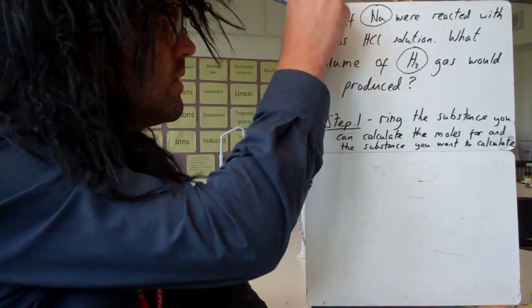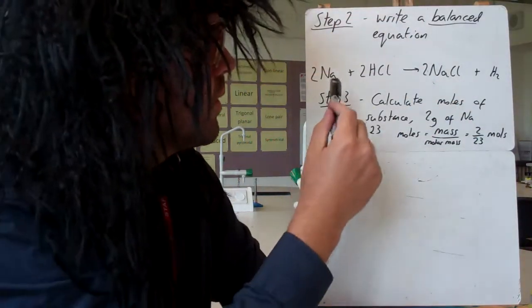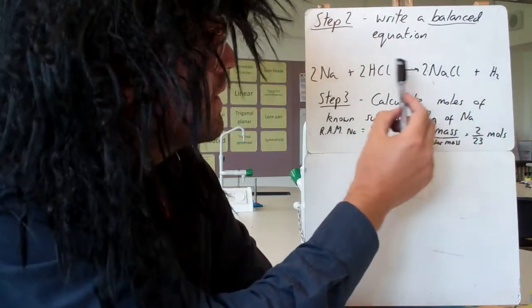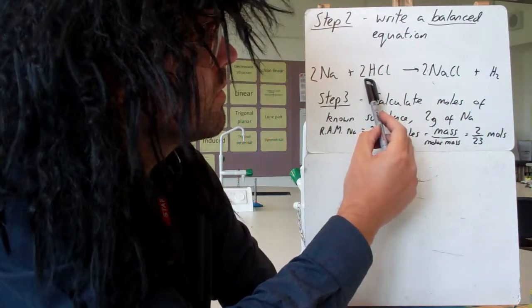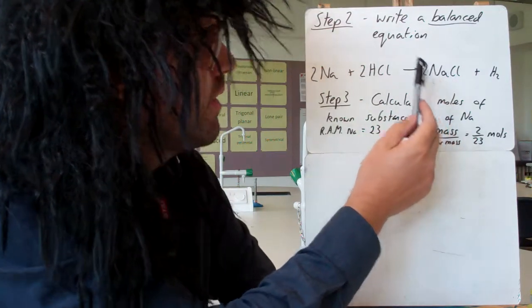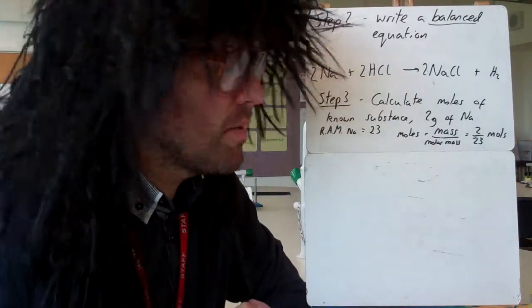The second step is to write a balanced equation. So we've got sodium with HCl producing NaCl and H2. Since H2, you're going to need a 2 in front of the HCl, which means you're going to need a 2 in front of the sodium, and if you've got a 2 in front of that, you need a 2 in front of NaCl. It must be balanced, that's really important.